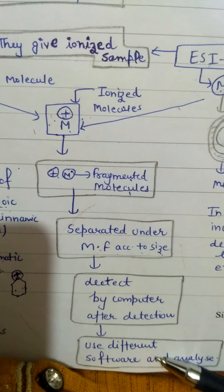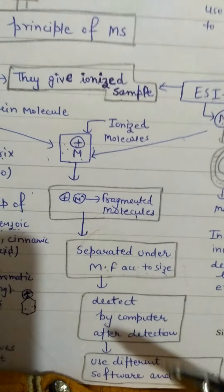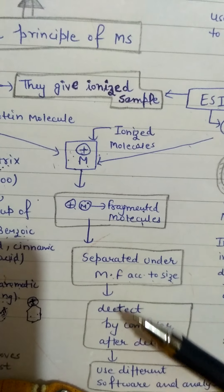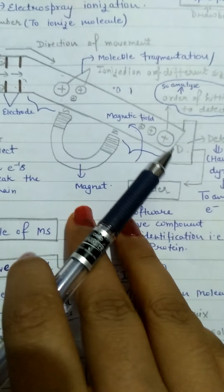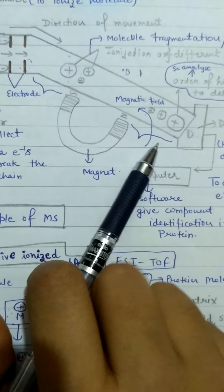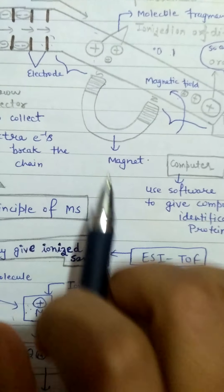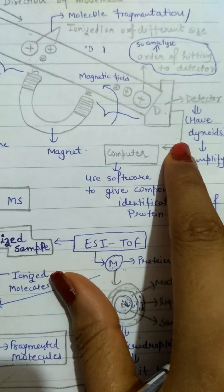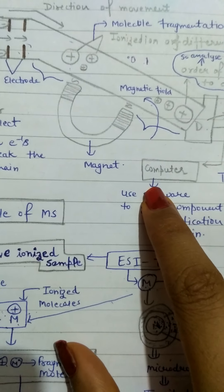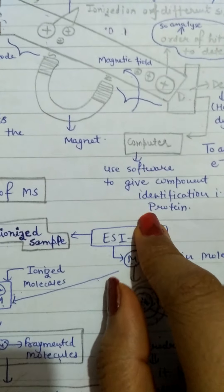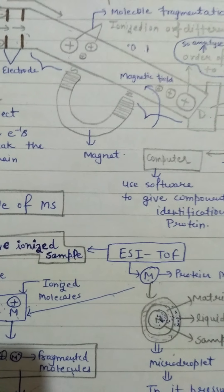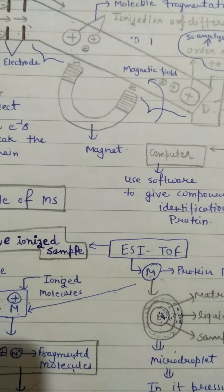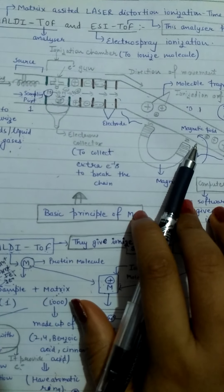We will use different software to analyze our protein samples and detect them using the same procedure. We will complete our sample analysis with the source of protein samples. Different bioinformatics tools help us identify the multiple proteins we are studying. Overall, I have three techniques here — this is the whole mass spectrometry principle.